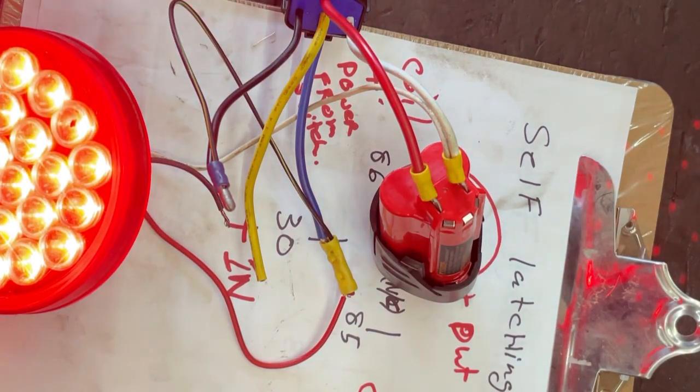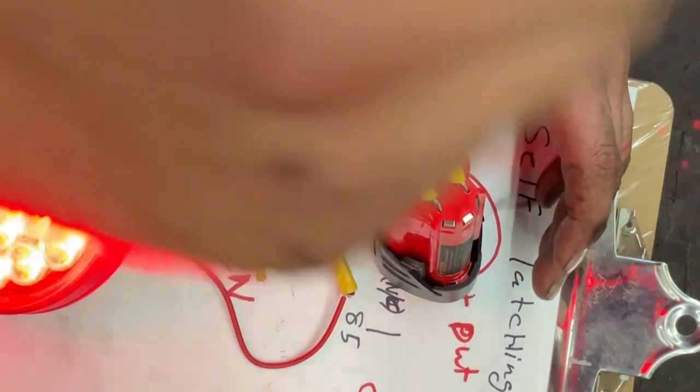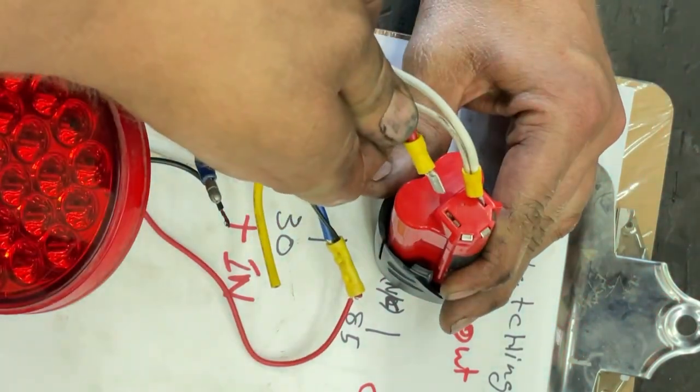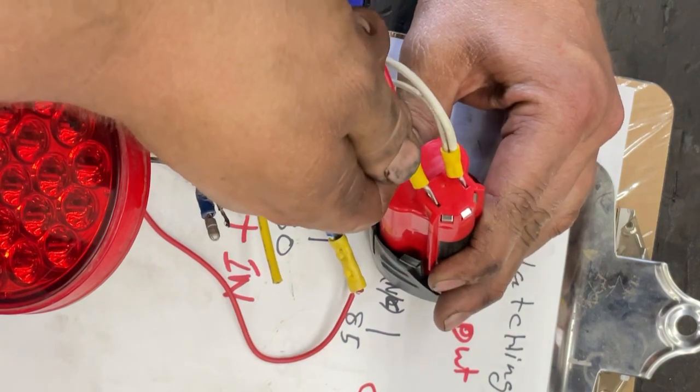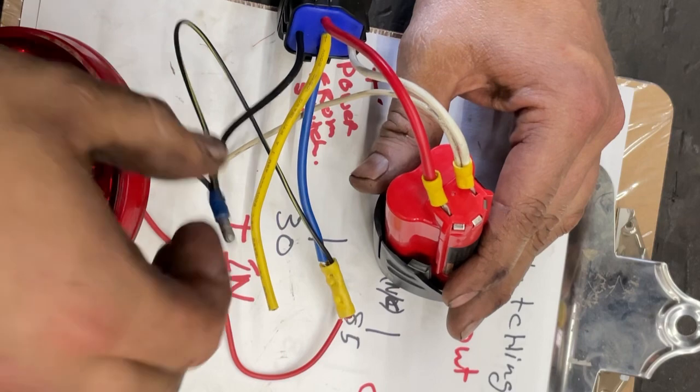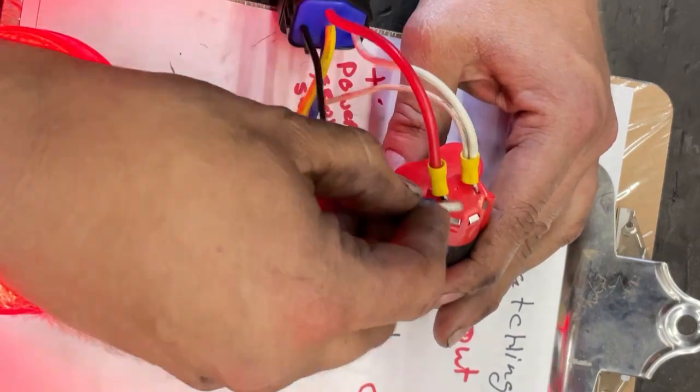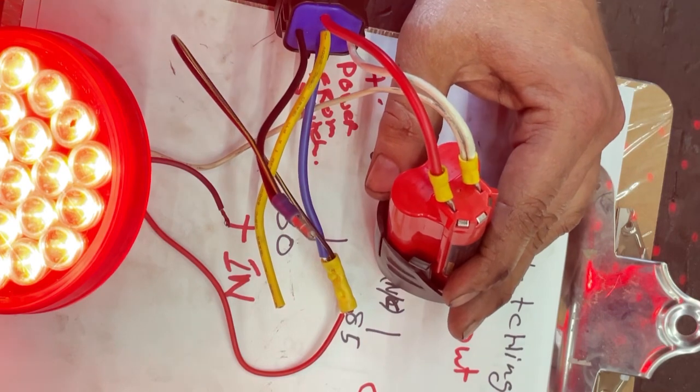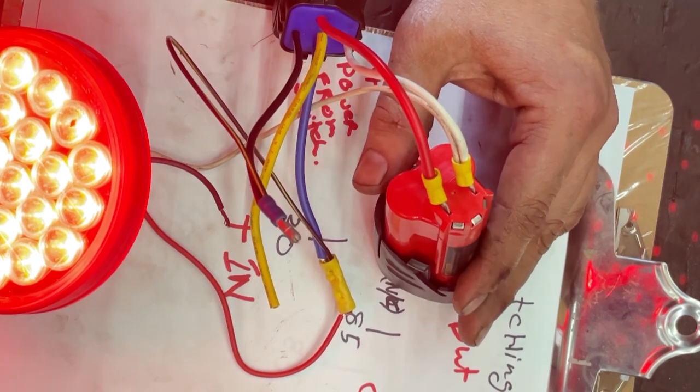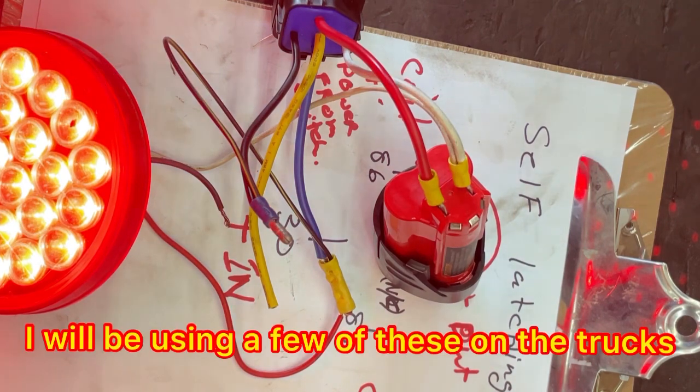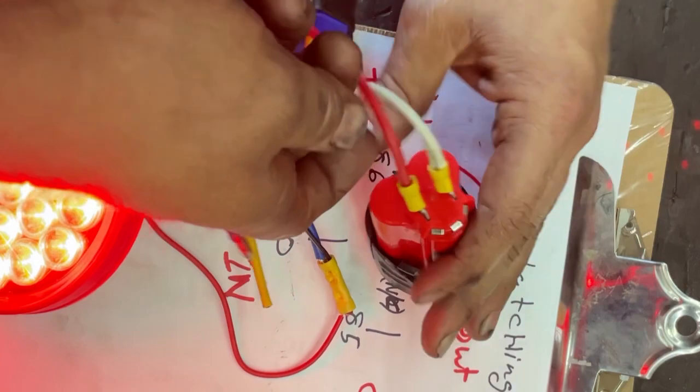The nice thing about this: let's say you turn your ignition off or you turn the switch like a master switch or something, it turns everything off. Turn it back on again, turn your ignition back on, nothing happens. Hit your momentary switch, turns back on and stays on. So there's lots of different things you can use this for. I just thought I would mention it to you guys because lots of people ask me questions about certain things.